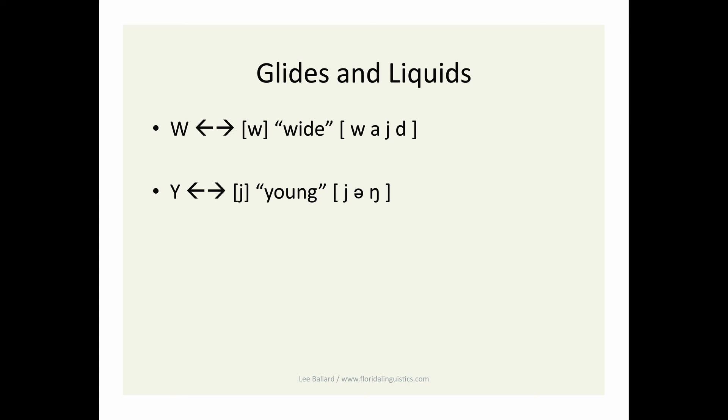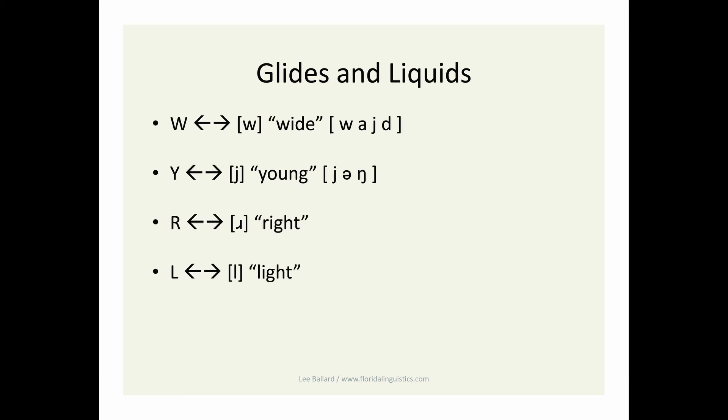Here we're speeding toward the end with only four consonants left to go. One of them you already know. The glide W as in wide. The other glide is Y as in young. You can see the full words transcribed here in IPA.